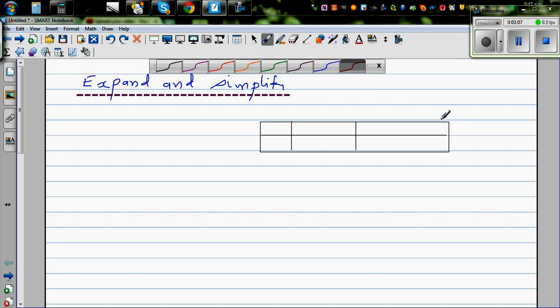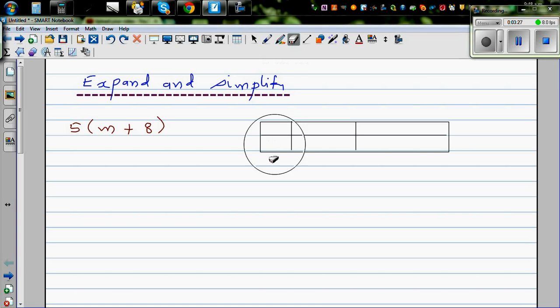Now before we make it complicated, let's use the same concept in algebra. So if it is 5 times (m + 8), suppose. This is what we get in algebra. So this is the same as what we did previously. This is 5. This is in the bracket. I'll put this is m plus 8.